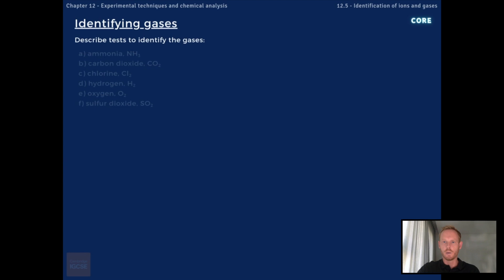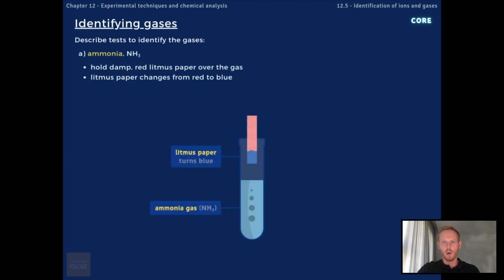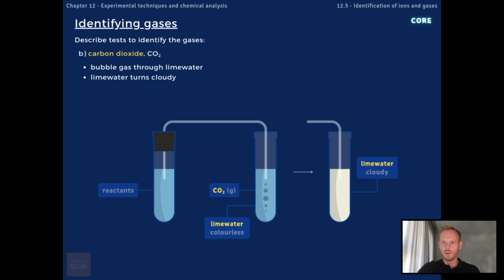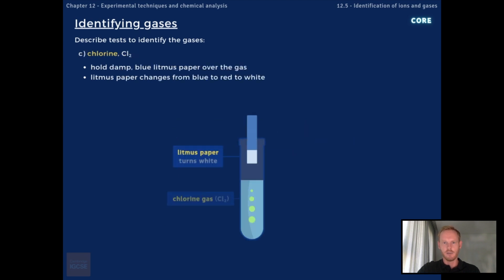You need to describe chemical tests to identify gases. To test for the presence of ammonia, hold a piece of damp red litmus paper in the mouth of the test tube containing the reactants. If the gas is ammonia, the litmus paper changes from red to blue. To test for carbon dioxide, use a delivery tube to bubble the gas from the reaction through lime water — if the gas is carbon dioxide, the lime water turns cloudy. To test for chlorine, hold a piece of damp litmus paper over the mouth of the test tube; if the gas is chlorine, the litmus paper turns white.